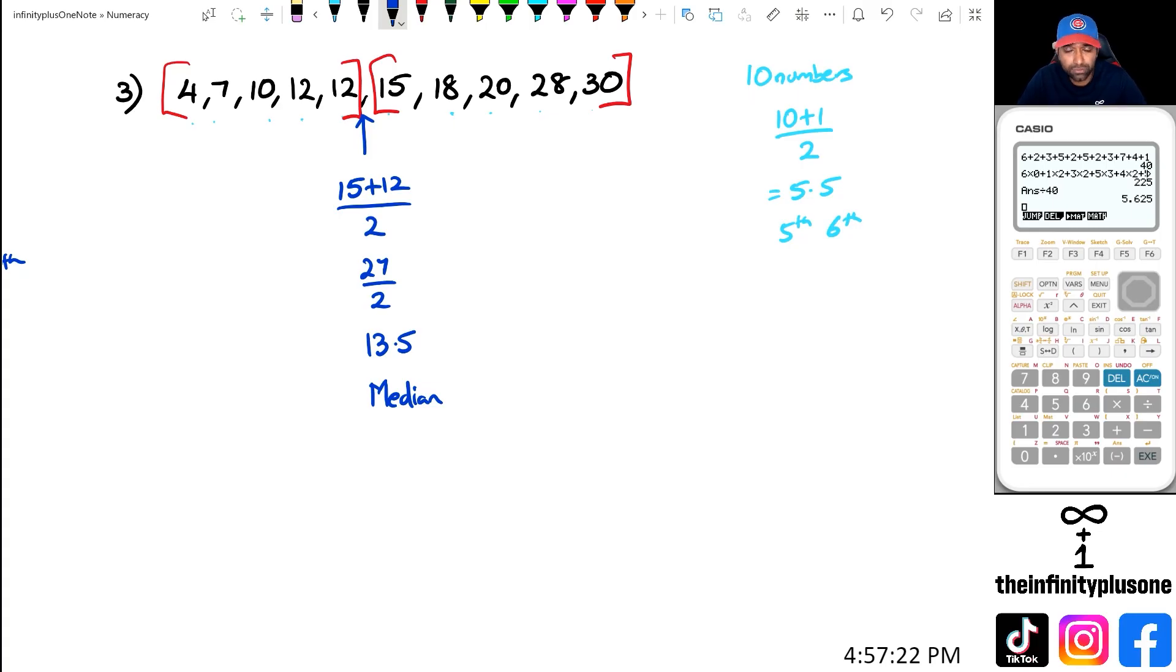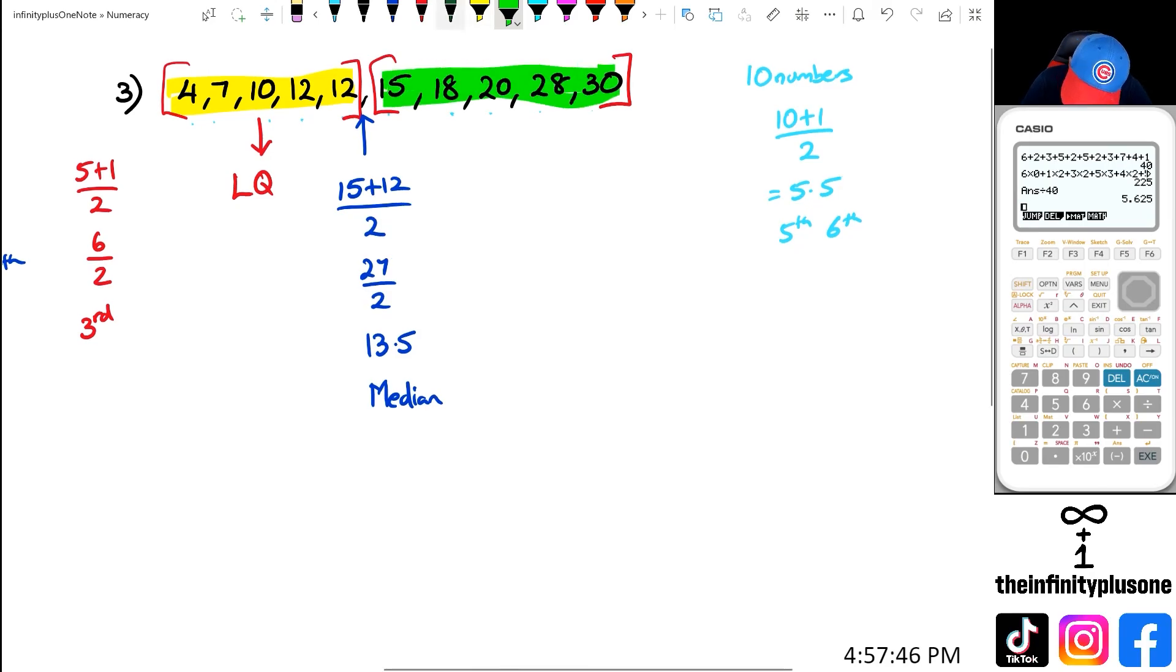Now we need to find the lower quartile. For that first bracket, we've got five numbers there. So we're going to do 5 plus 1 divided by 2. 6 divided by 2 is going to give me the third number, and as you can see, this is going to be the lower quartile. And you can pretty much repeat that same process for the second half. So I'm looking for the third number there—that's going to be my upper quartile. So lower quartile is equal to 10, upper quartile in this case is equal to 20.